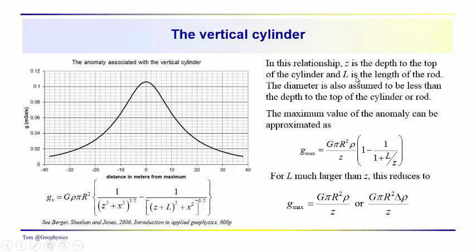That's where l is the length of the rod, and the length of the rod is usually considered to be, in this formulation here, much greater than the depth to the top of the rod, which z represents. So for l much larger than z, this reduces to g times the cross-sectional area, pi r squared times rho, or delta rho, over z, which is the depth to the top of the rod or vertical cylinder.